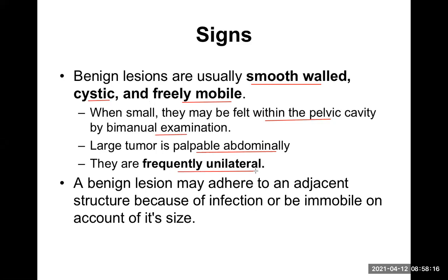Bilateral tumors may also exist. Although benign tumors are freely mobile, they may sometimes adhere to adjacent structures due to infection or inflammation causing adhesion formation, leading to immobility. Sometimes, if the tumor is very large and filling the whole abdominal or pelvic cavity, it is again immobile because there is no space to move. Malignant tumors are usually immobile and benign tumors are usually mobile, but there are certain exceptions in benign tumors where immobility can occur.